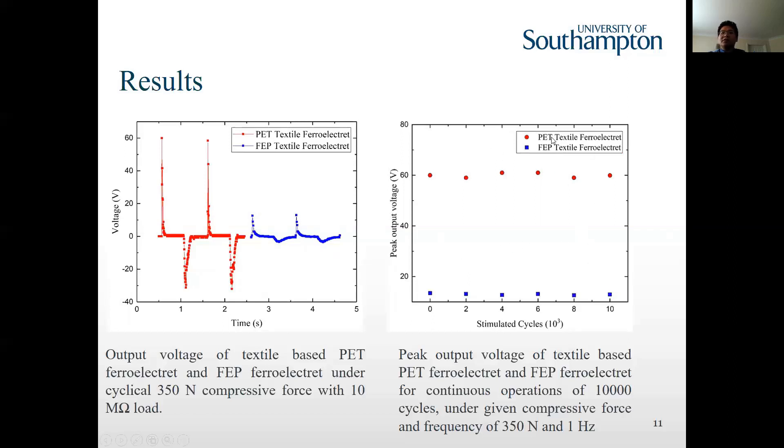The right figure shows the durability testing result. Durability testing is an important test for wearable energy harvesters. The figure shows the output voltage stability of the PET and FEP textile ferroelectret. They are tested by pressing and releasing for continuous 10,000 cycles under compression force at frequency of 300 to 550 newton at one hertz. Both of them remain at the consistent value of 60 voltage and 30 voltage.